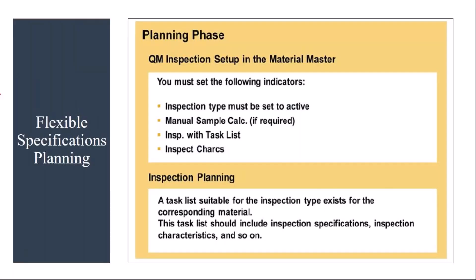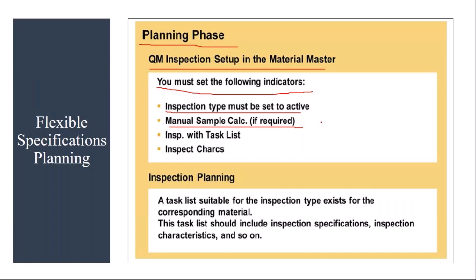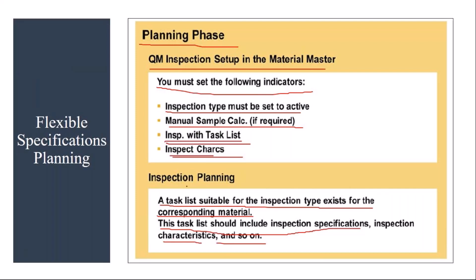Now we will start with flexible specifications planning. Basically, in the planning phase, you set up the master data. You must set the inspection type with standard ACP settings — you put in sample calculation settings. And you have the super task list here, where all MICs are maintained. This is in the planning phase. Also, a task list suitable for inspection plan — the super task list — will contain all inspection specifications, characteristics, and other settings.